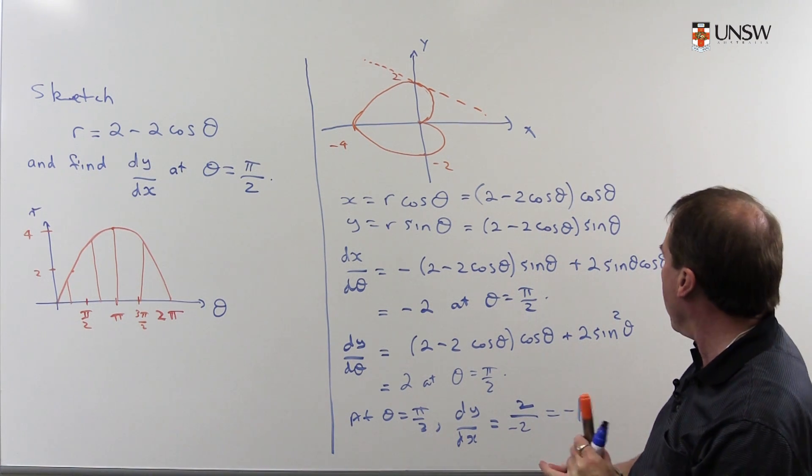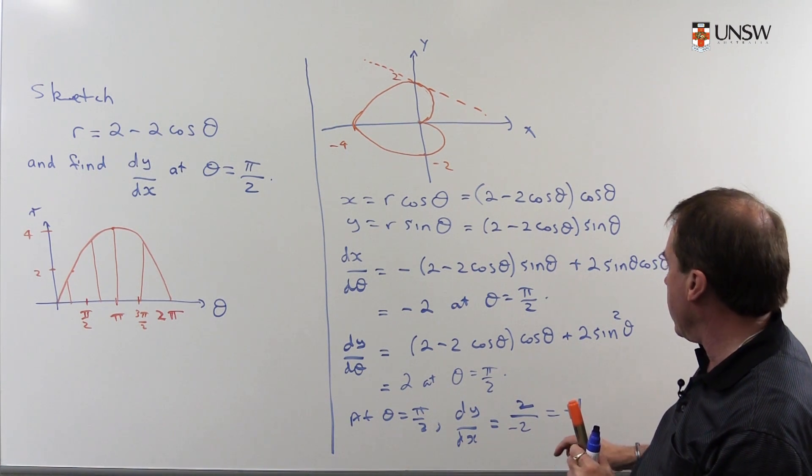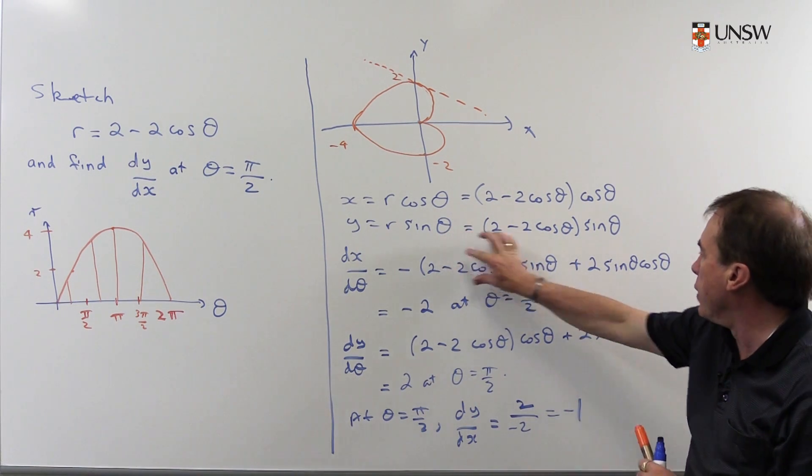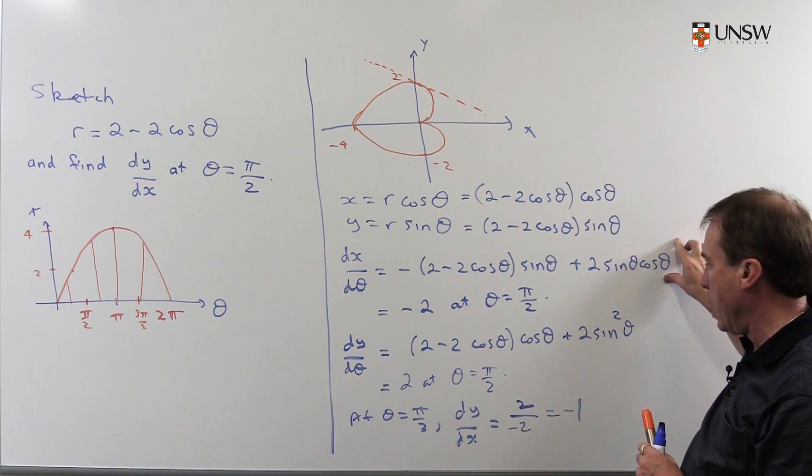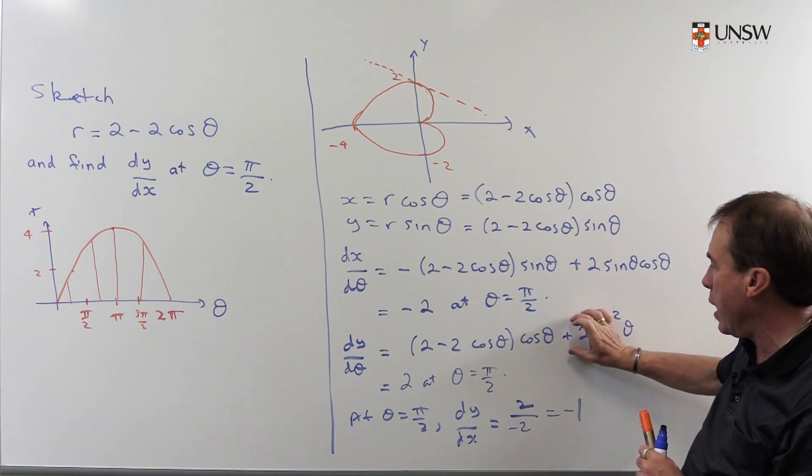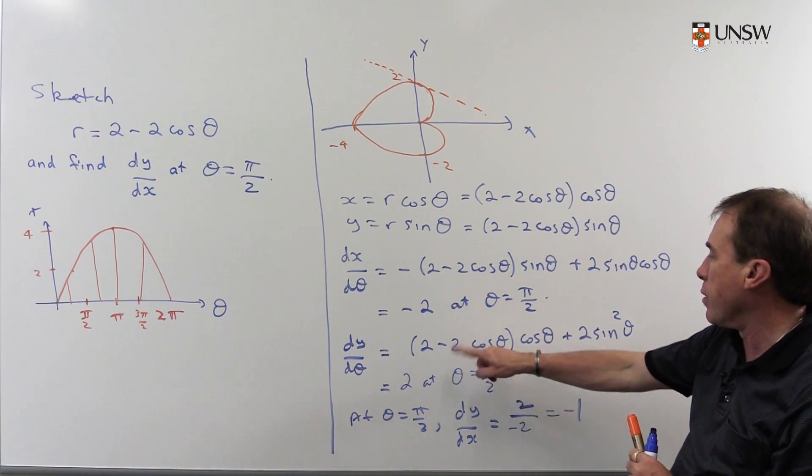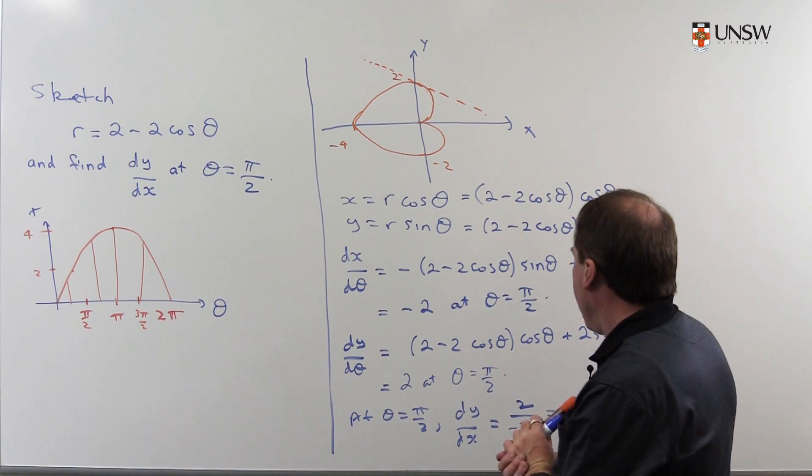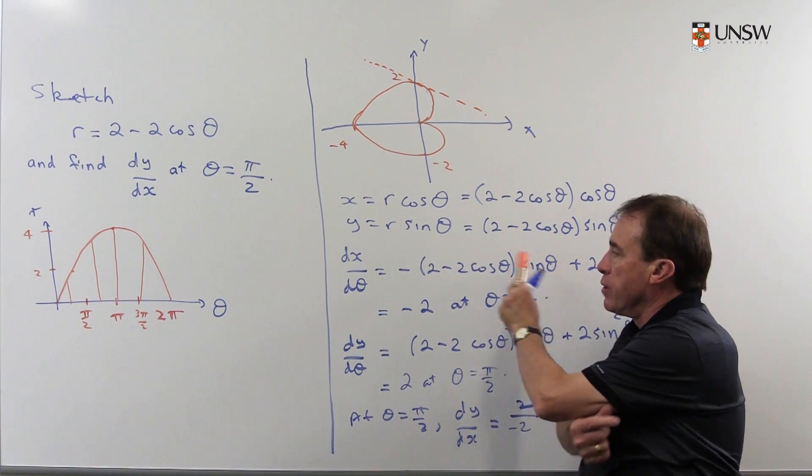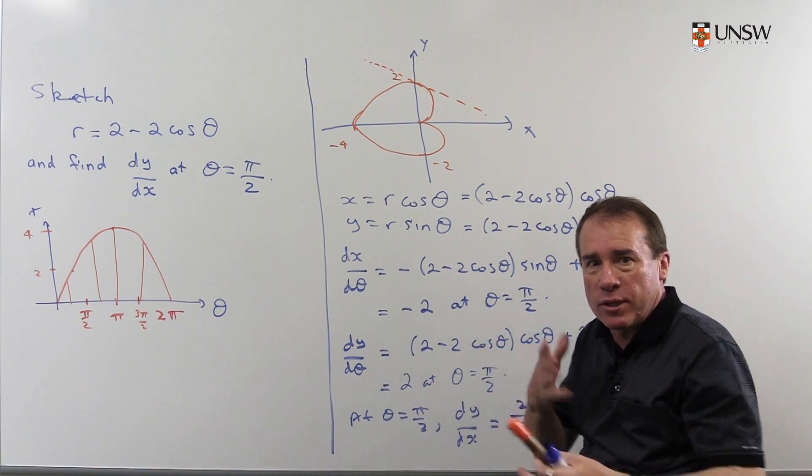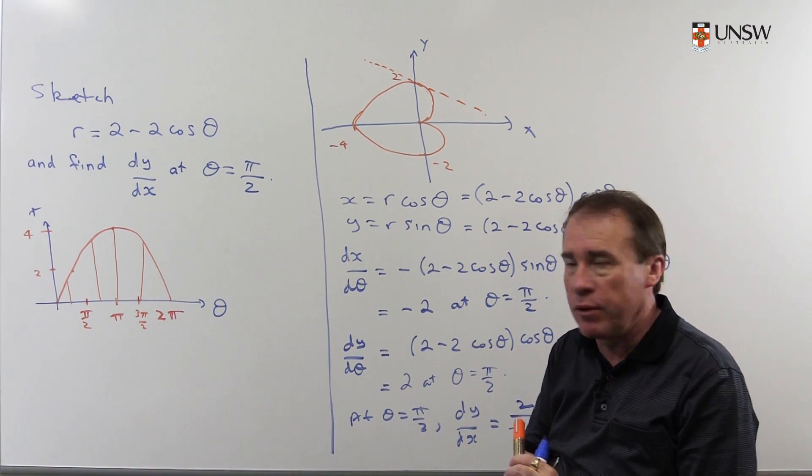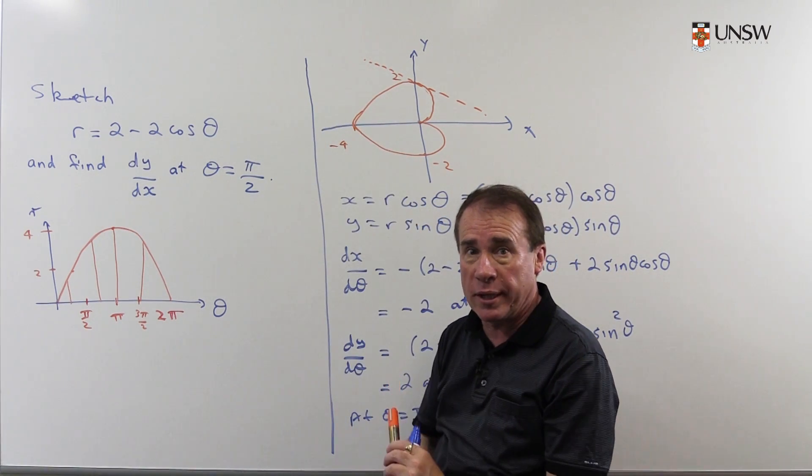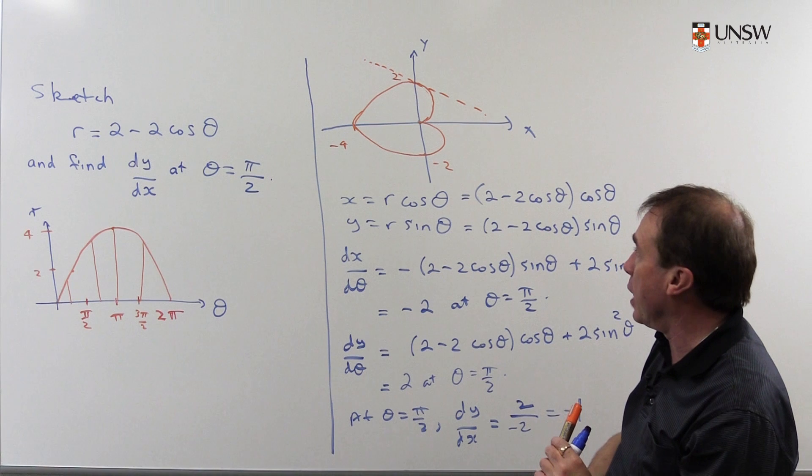If you put θ as π into dx/dθ, then this is all 0. If you put θ as π into there, you don't get 0. In fact, you get some number, -4 or something. So when you divide the two, you'll be dividing essentially by 0. And so the gradient then is going to become infinite at that point, which makes sense in the picture because you can see at that point the gradient's going to be undefined.